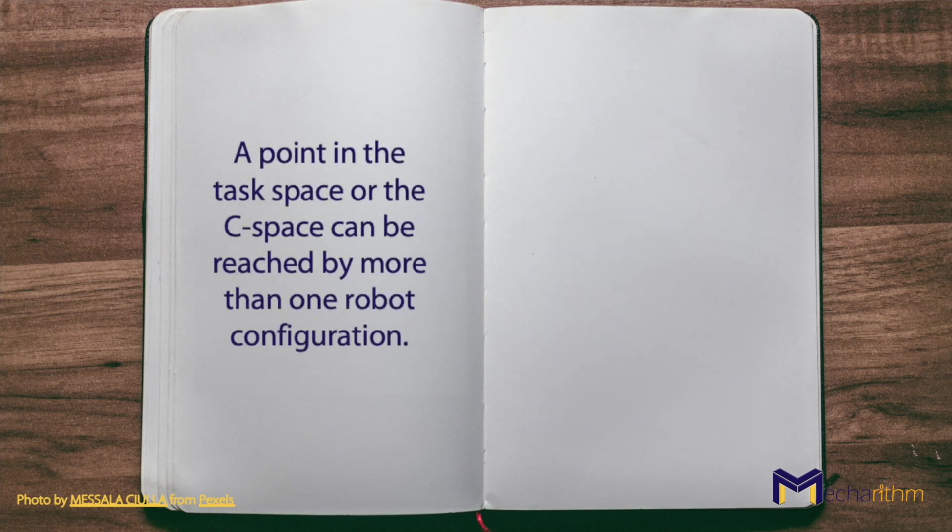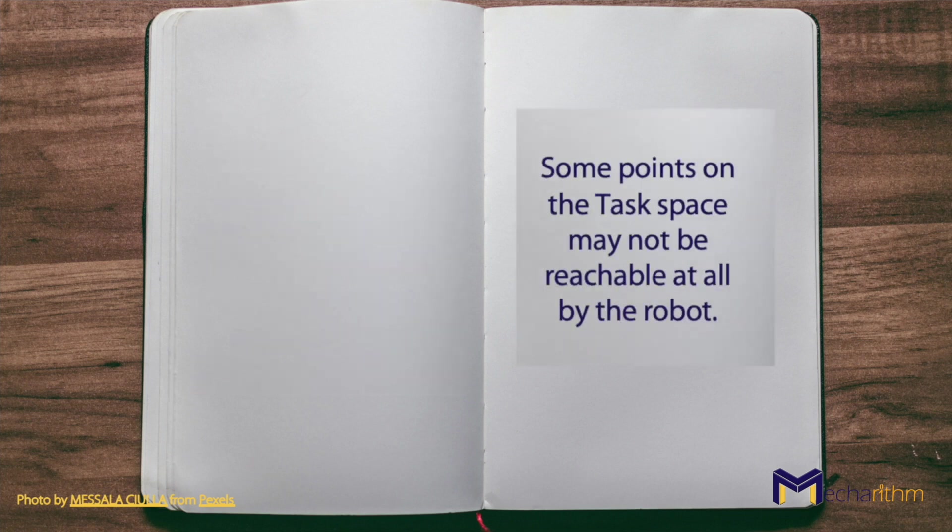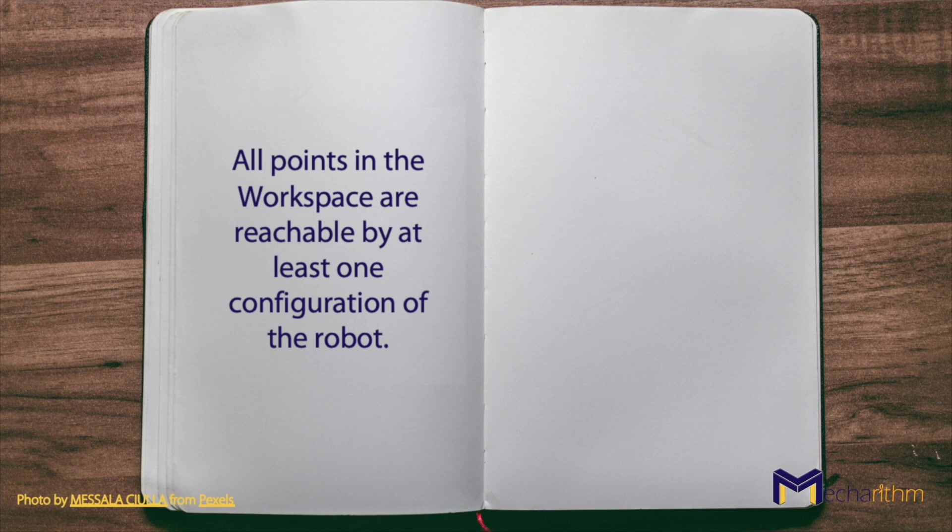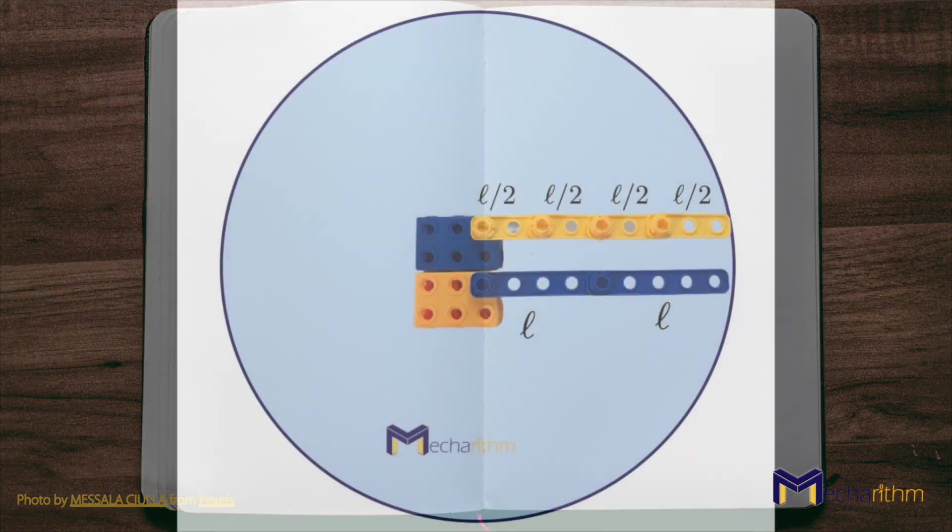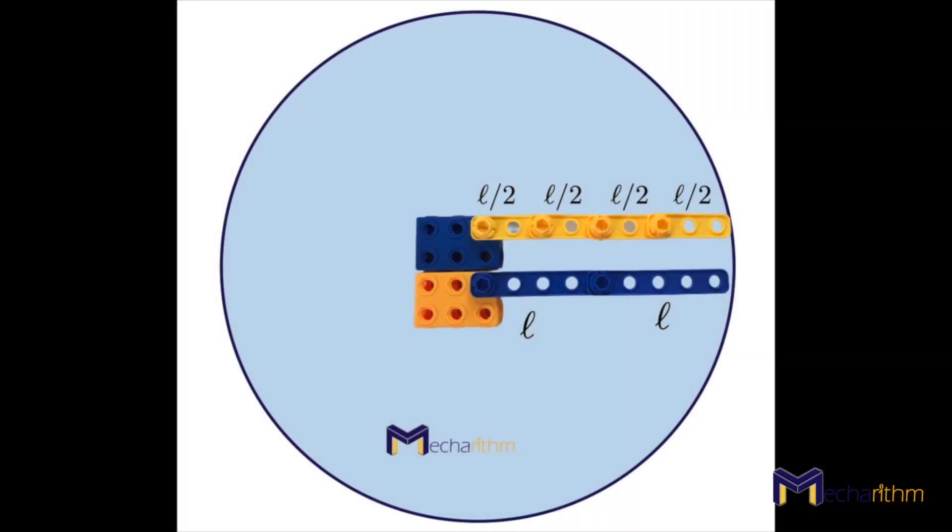A point in the task space, or the workspace, can be reached by more than one robot configuration. Some points on the task space may not be reachable at all by the robot. All points in the workspace are reachable by at least one configuration of the robot.